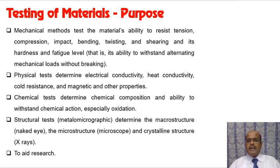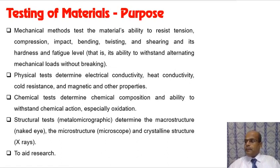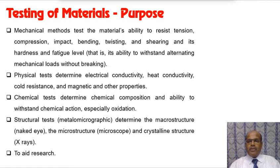Chemical tests determine the chemical composition — for example, XRD (X-ray diffraction) can check material composition — and the ability to withstand chemical action such as oxidation. For example, if the iron content is poor, we can identify oxidation resistance issues. The material's ability to resist tension, compression, impact, and twisting moments is also assessed.